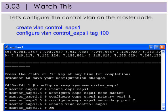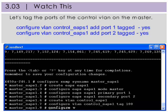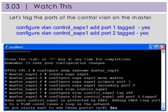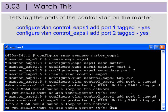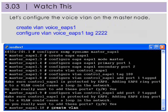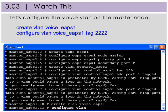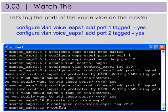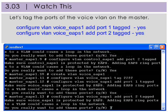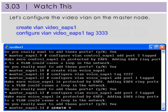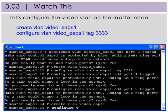Let's configure the control VLAN on the master node now. We'll create it and call it control_EAPS1 and give it a tag of 100. Now we're going to add the control VLAN as a tagged port on ports 1 and 2. Let's create the VLAN voice_EAPS1 and give it a tag of 2222. We'll configure the voice VLAN and add the ports 1 and 2 tag.